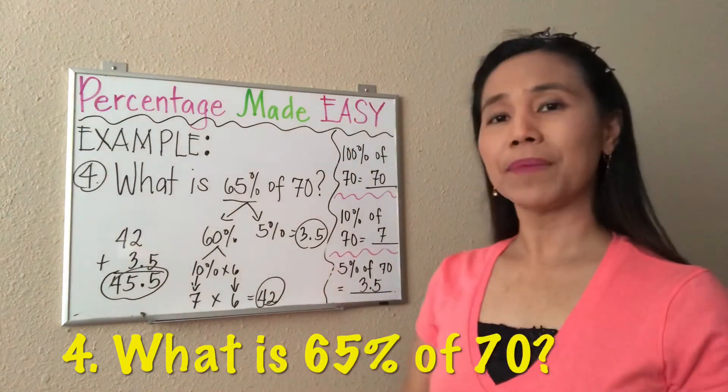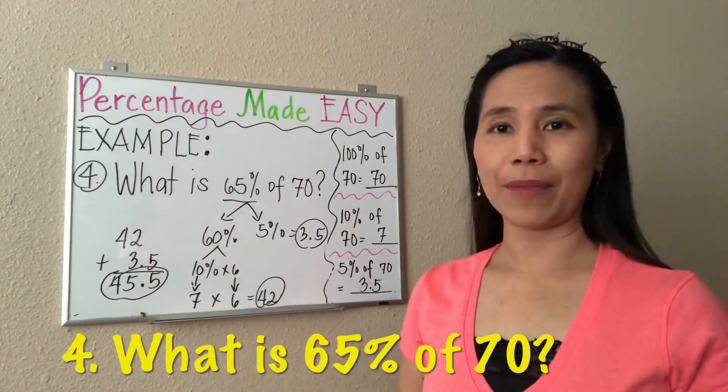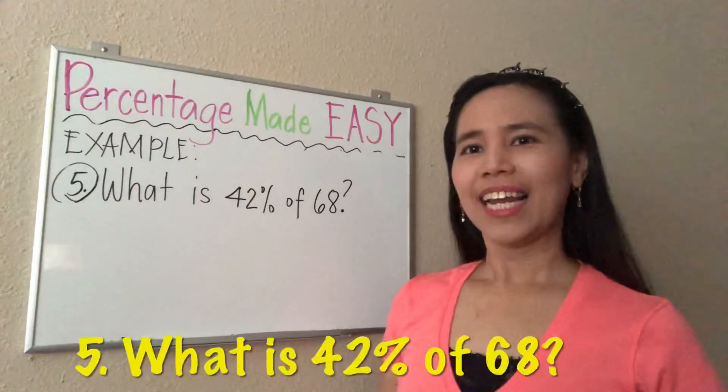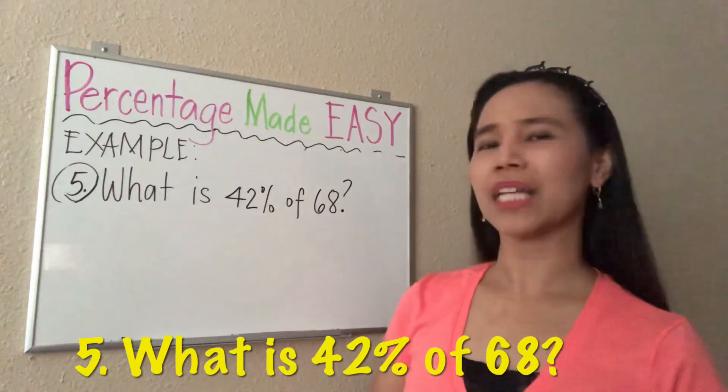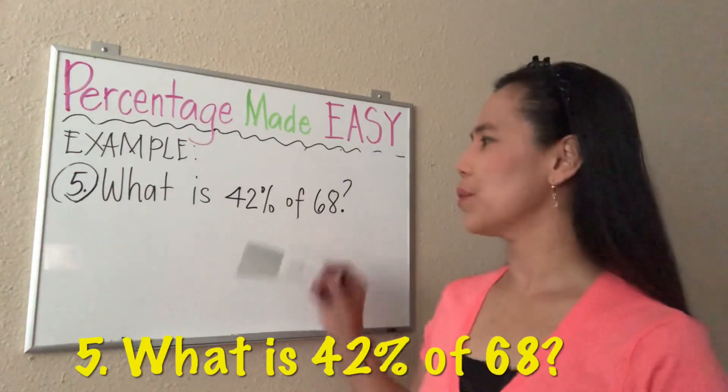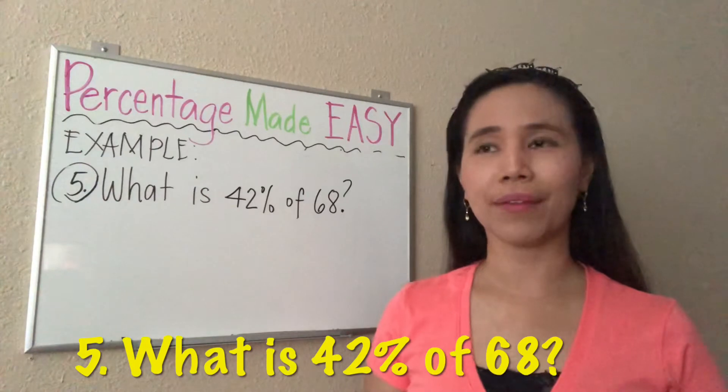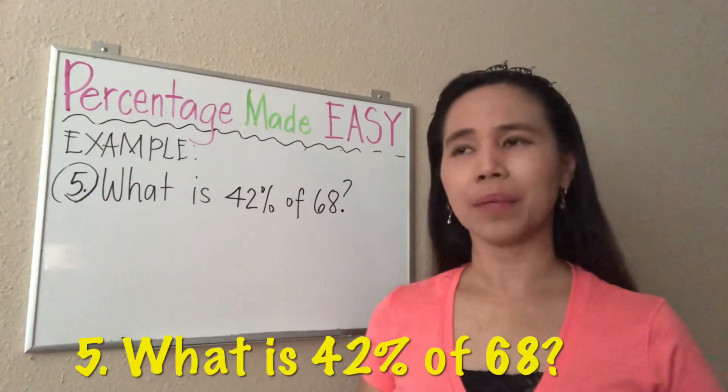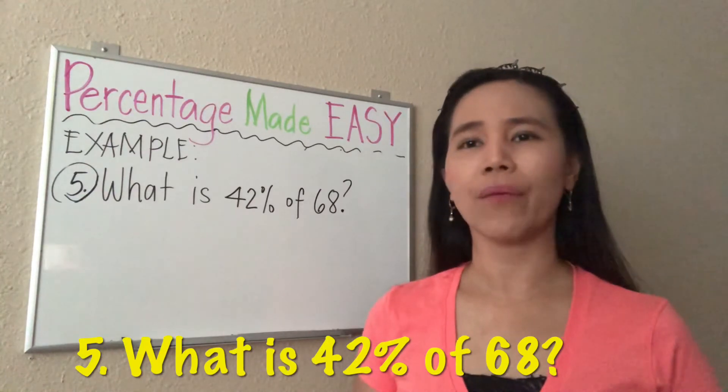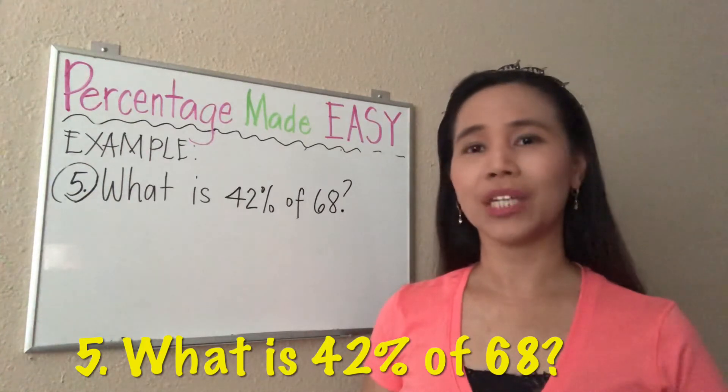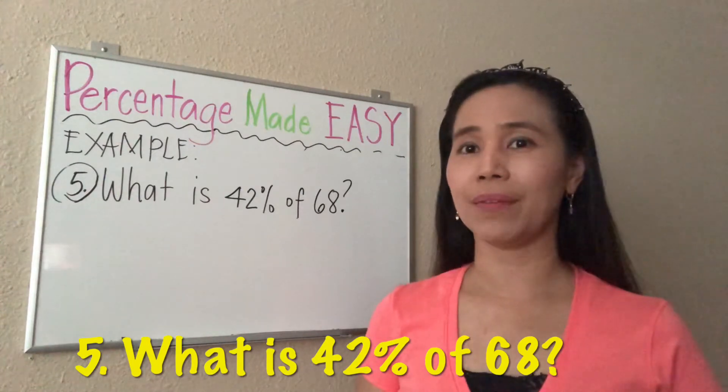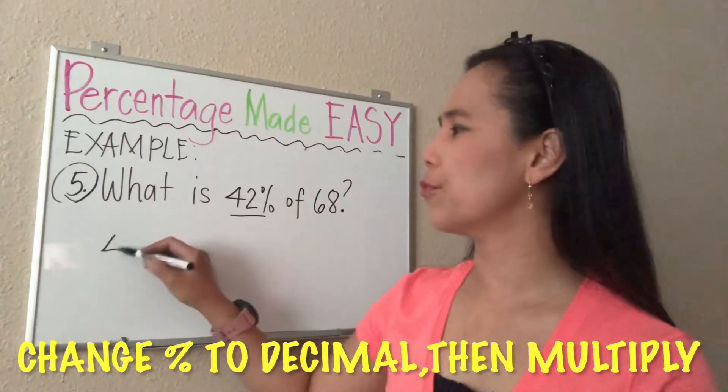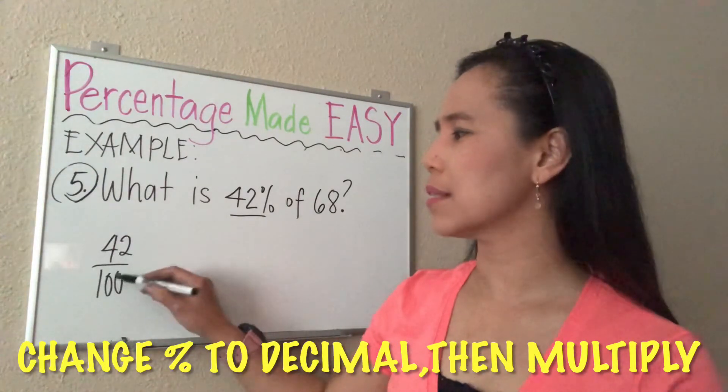Let's have the last example: what is 42% of 68? Both numbers do not have zeros anymore, so we can't apply the zero cancellation strategy. We can still apply the 100% and 10% strategy, however it will be more complicated. That's why I'll teach you another strategy which is easier. 42% is equal to 42 over 100, so let's change that to decimal.